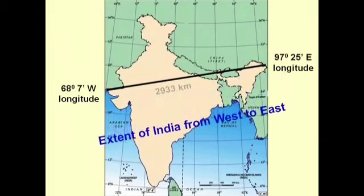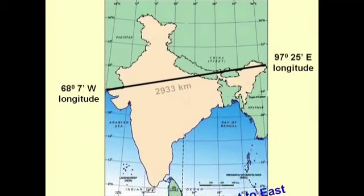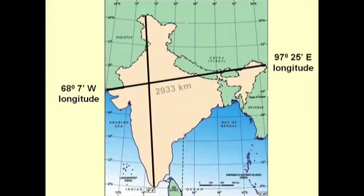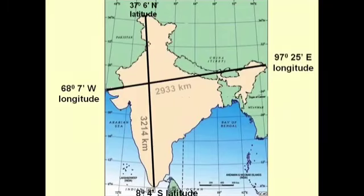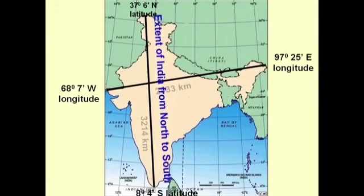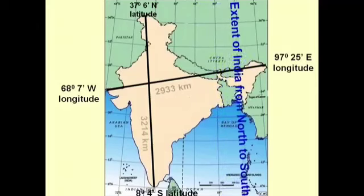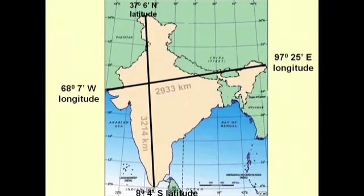Its coastal boundaries are 7,516 kilometers. Our country is enormous in size and is full of too much variety of culture, religion, and variation in different fields. You can say that India is a country with variety of culture, religion, and geographical features — and that is why India is called a subcontinent.